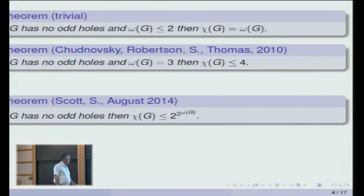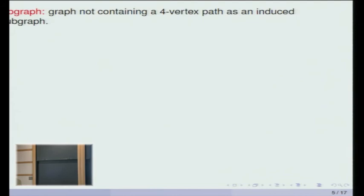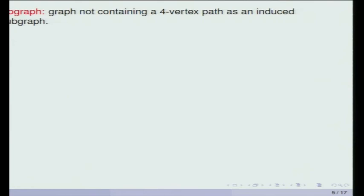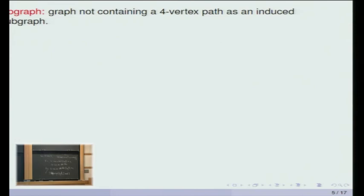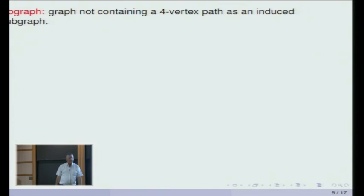So I want to actually show you the proof. We're going to take a graph with no odd holes and bounded clique number, and prove a series of lemmas saying we might as well assume this, we might as well assume that. We'll get more and more assumptions, and finally we can understand the graphs that satisfy all of them. There's a lemma I'll apply at the end, so let me do the lemma first — a co-graph means a graph with no induced four-vertex path.